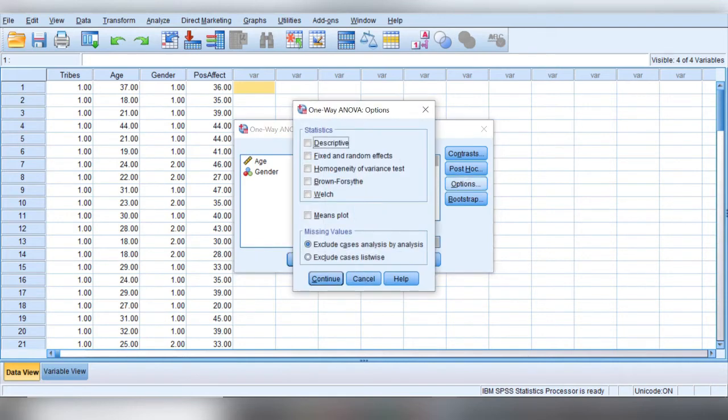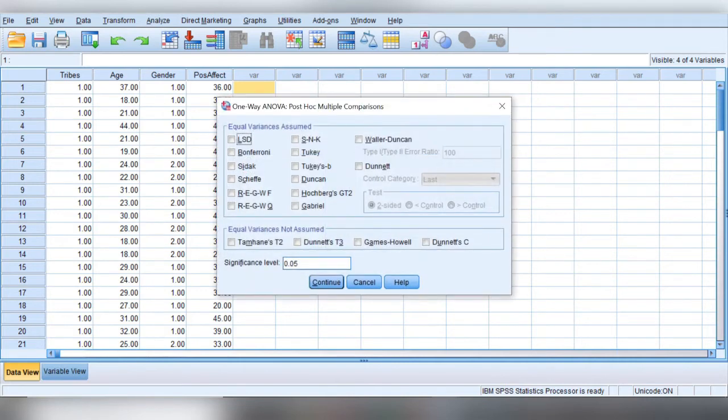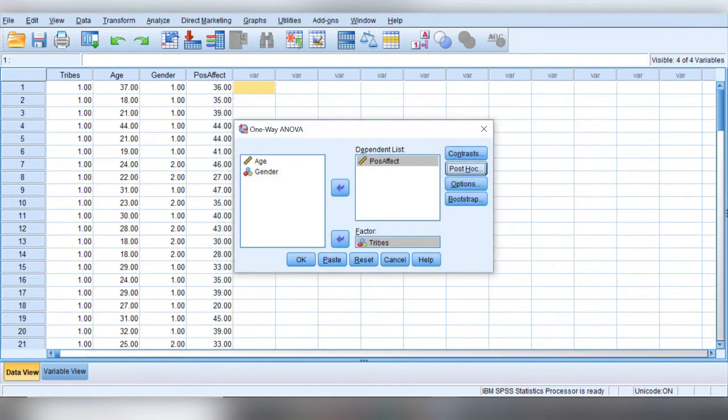If we check options, a new window will appear. Here we will get options to check descriptives and the test of homogeneity. Continue. If we check post hoc, a new window will appear with a range of statistical rules on post hoc analysis. As I assume that my data is homogenous in distribution, I am checking Tukey, then continue. Then click OK.